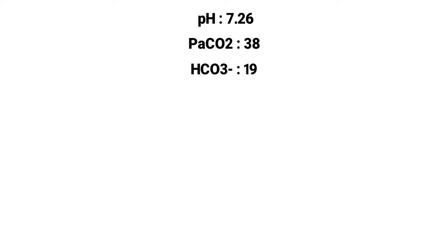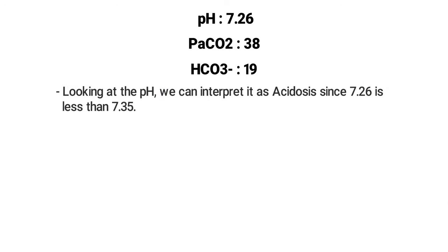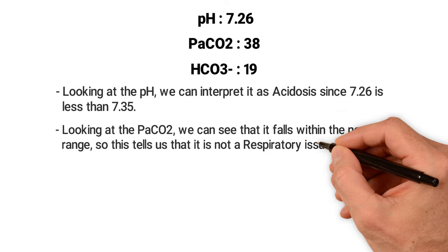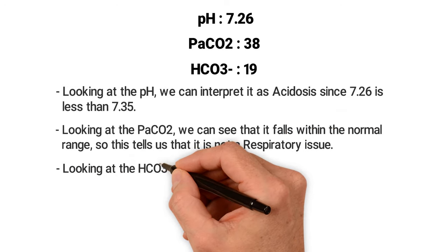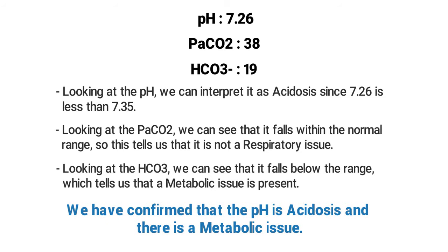Let's say that the pH is 7.26, the PaCO2 is 38, and the bicarb is 19. How can we interpret this ABG? First, by looking at the pH, we can see that it is acidosis, since 7.26 is less than 7.35. Looking at the PaCO2, we can see that it falls within the normal range, so this tells us that it is not a respiratory issue. Looking at the bicarb, we can see that it falls below the normal range, which tells us that we have a metabolic issue. So, this ABG can be interpreted as metabolic acidosis.